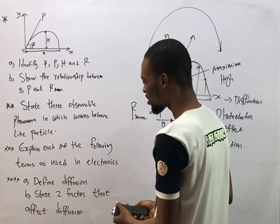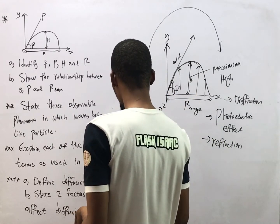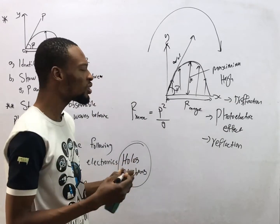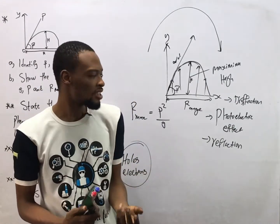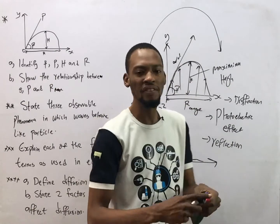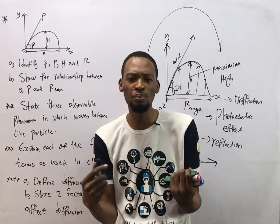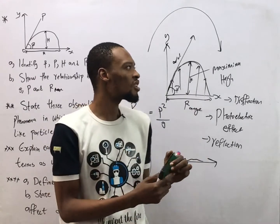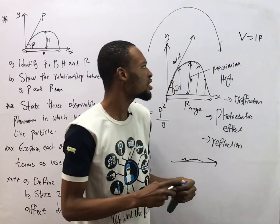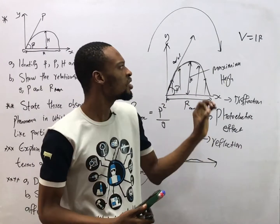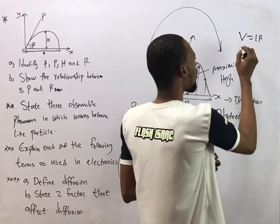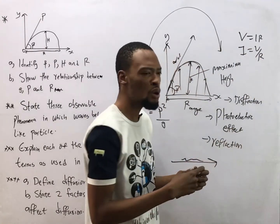The next question says we should explain holes and electrons. In electricity, electrons are charge carriers — electricity is the flow of electrons in a conductor. Voltage is what pushes the current; without voltage, current would not be able to move. That's why we have V = IR. The higher the resistance, the higher the voltage required, and current equals voltage over resistance.